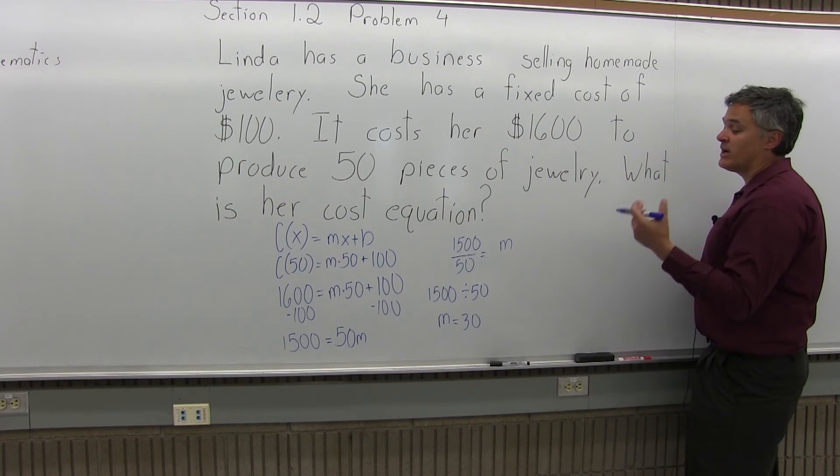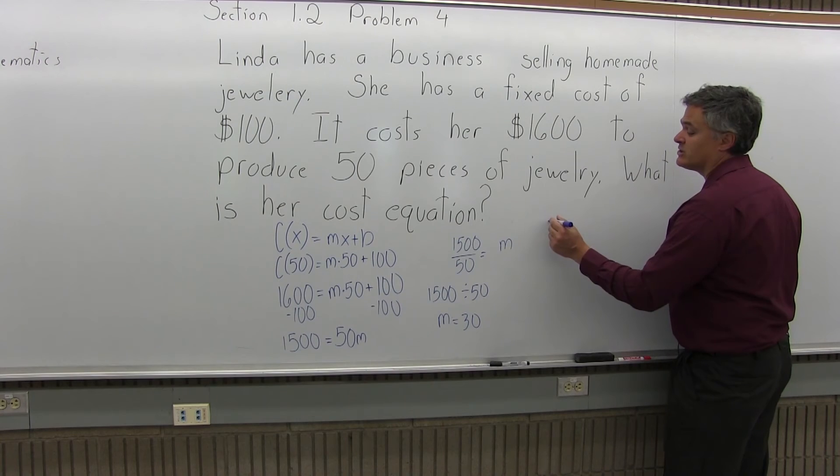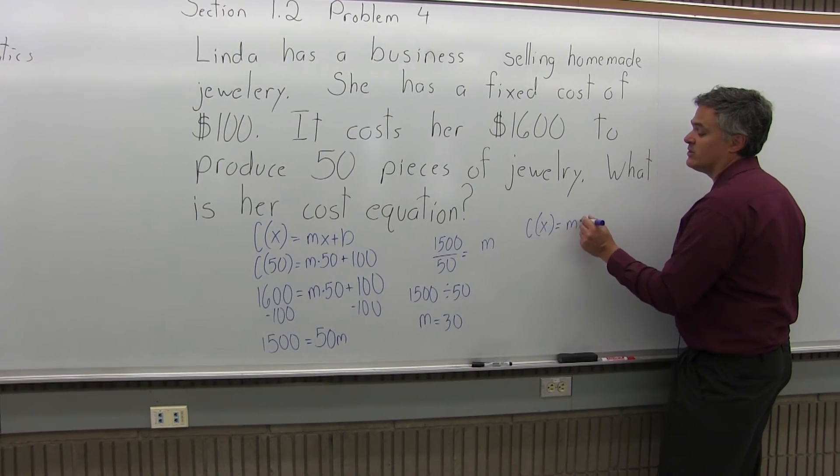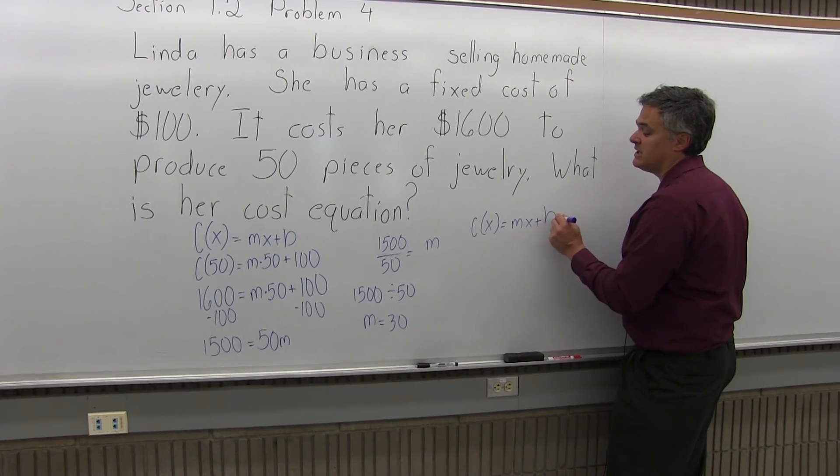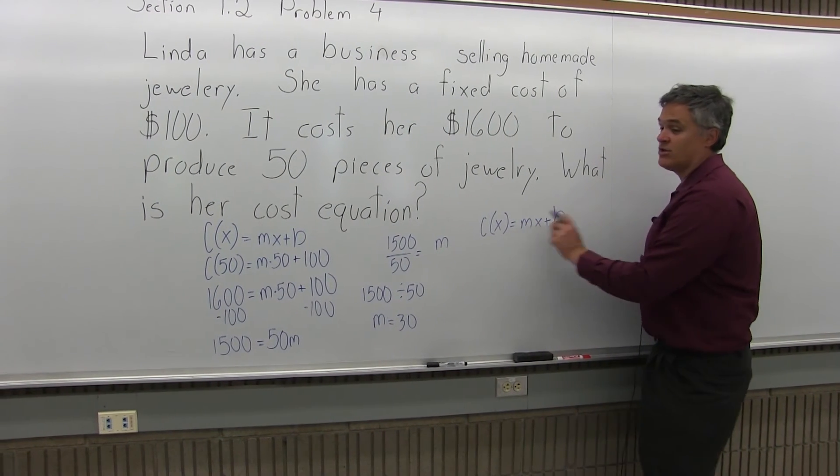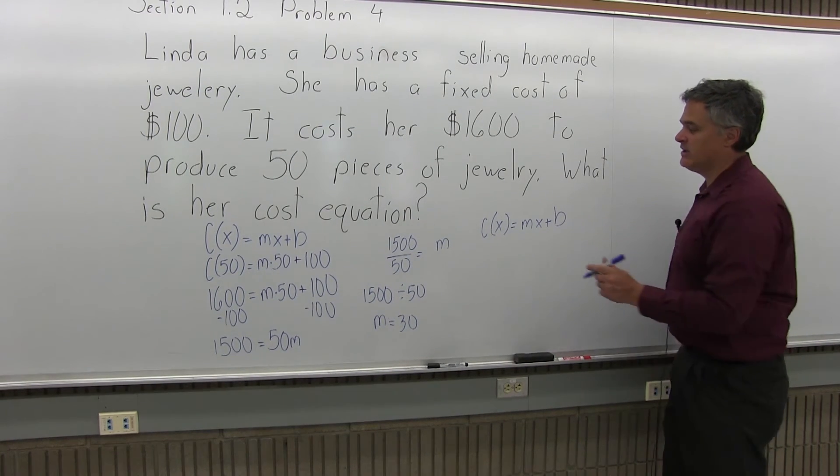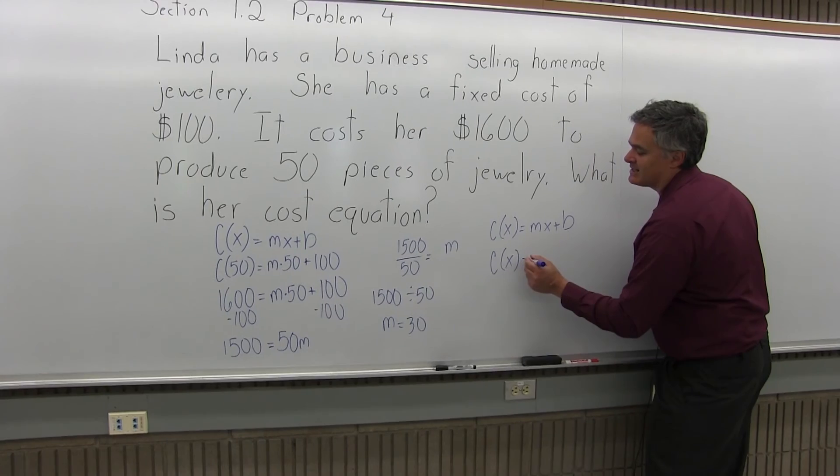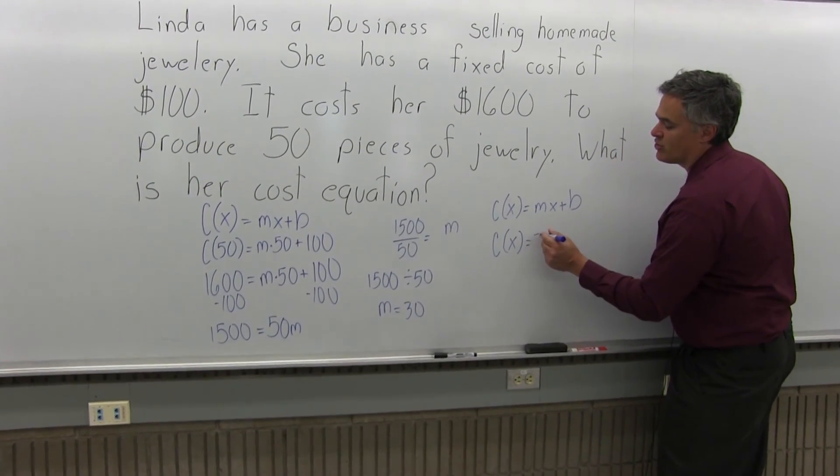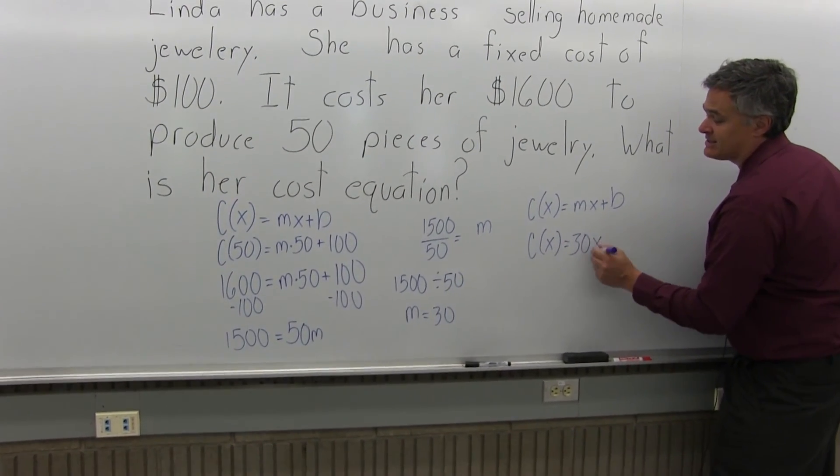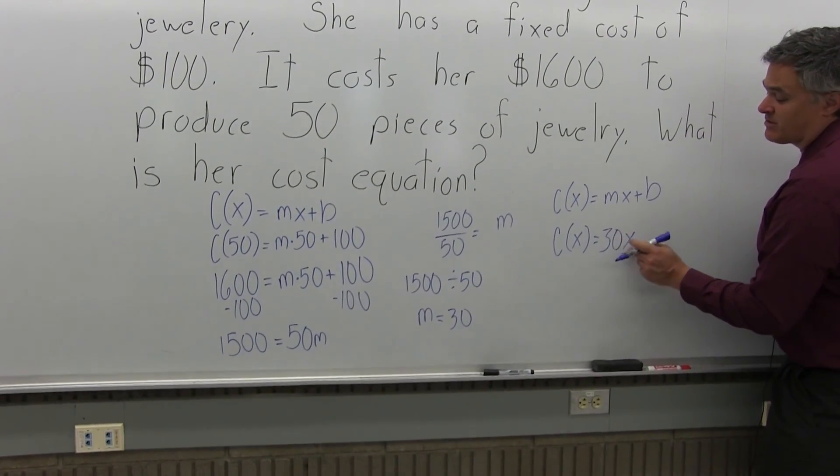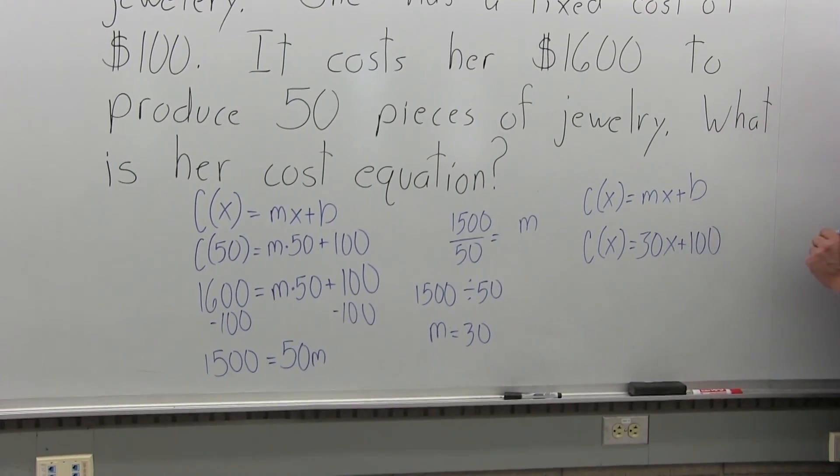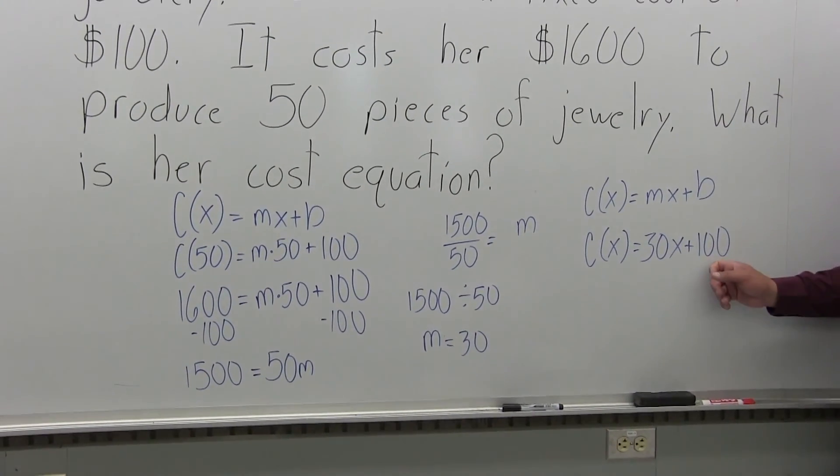Now the original question asked, what is the cost equation? The cost equation has the form C(X) = MX + B. Now that we know M is 30 and B is 100, we can write the cost equation: C(X) = 30X + 100. 30 is the cost to produce each item, X represents the number of items, and the fixed cost is 100.